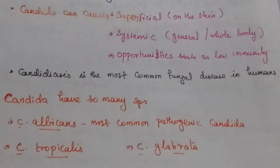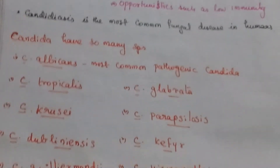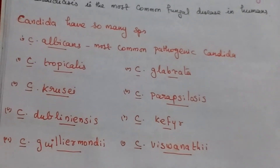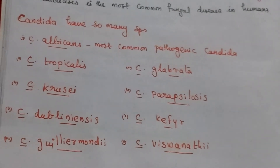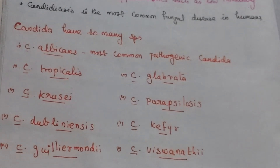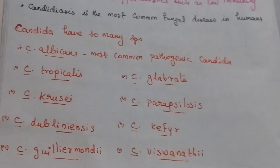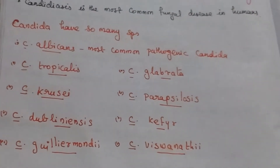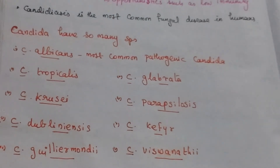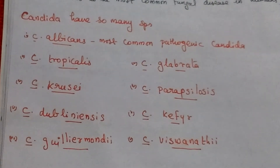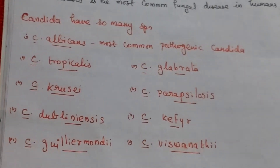Candida has many species — Candida albicans, tropicalis, parapsilosis, and so many more. Comparing to others, Candida albicans is the most common pathogenic one.